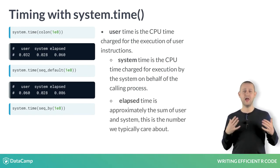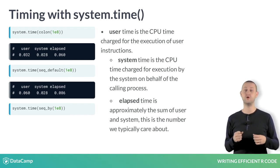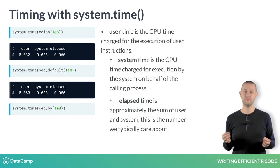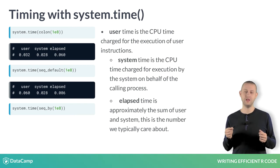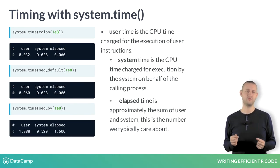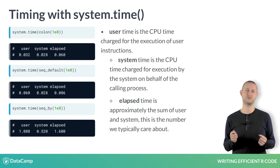And the elapsed time — the important one — is approximately the sum of the user and system. This is the number we typically care about. So in this example, it took 0.06 seconds for the colon function, but 1.6 seconds for the sequence function.